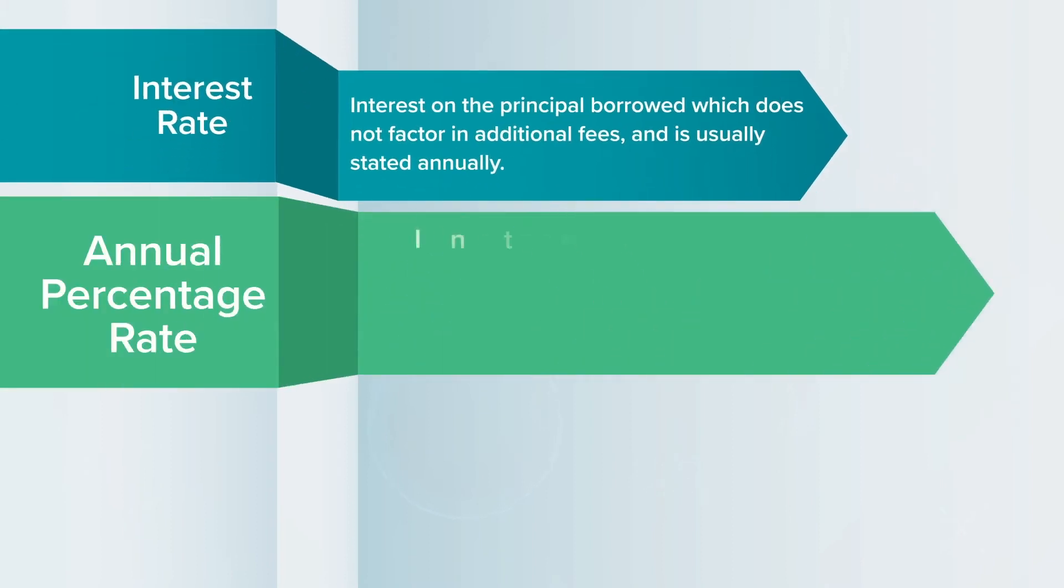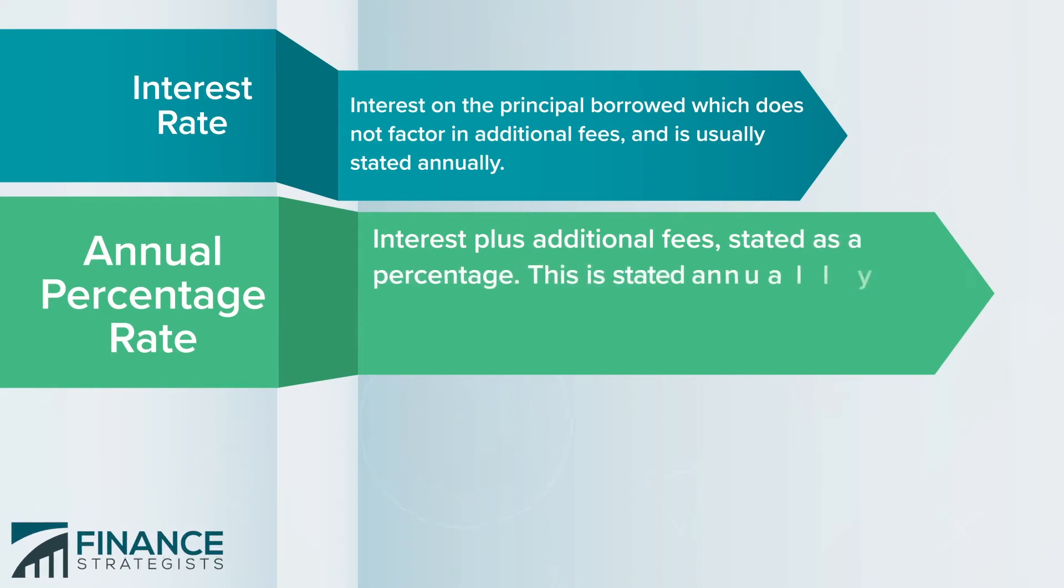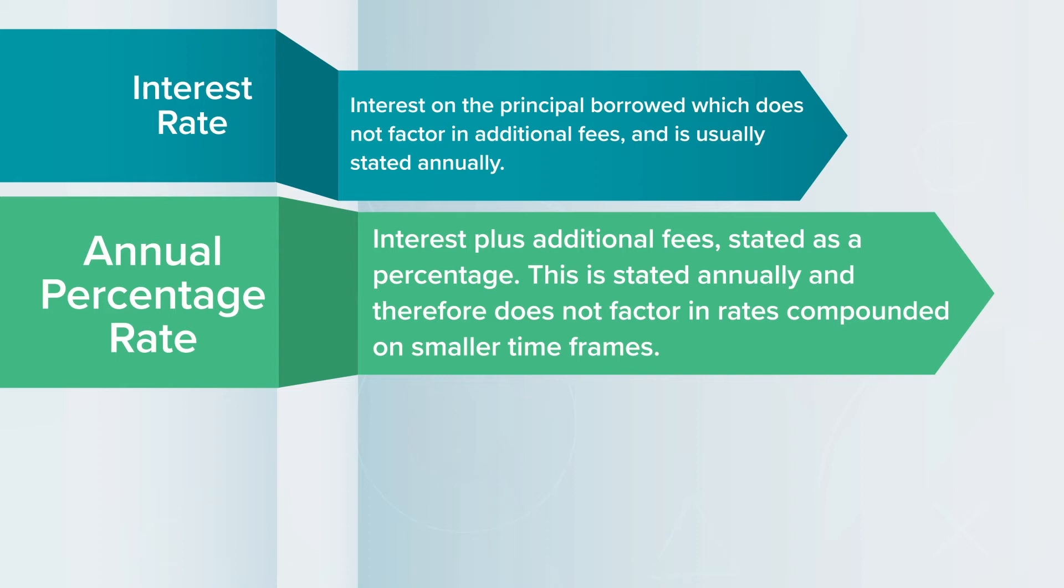Annual Percentage Rate is the interest plus additional fees stated as a percentage. This is stated annually and therefore does not factor in rates compounded on a smaller time frame.